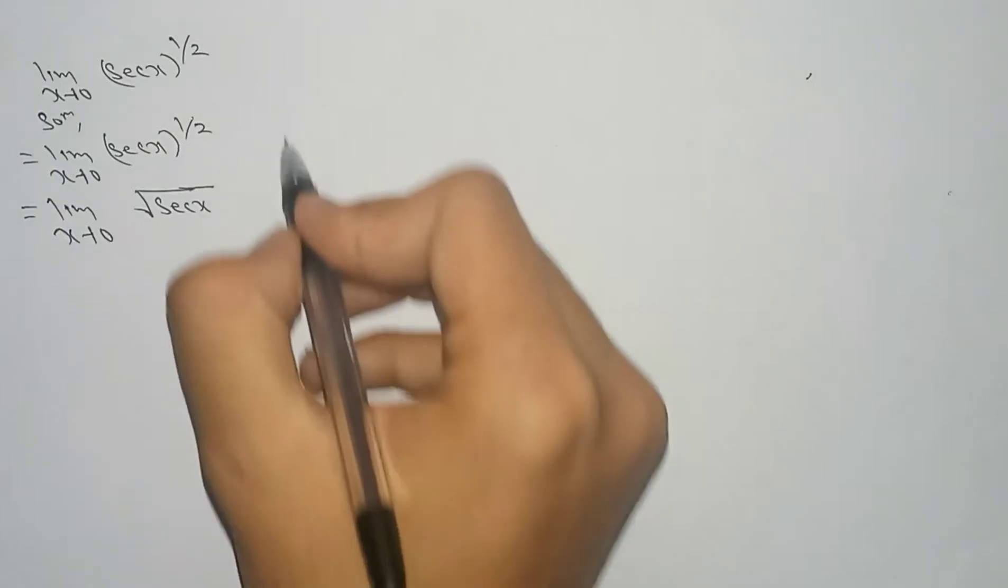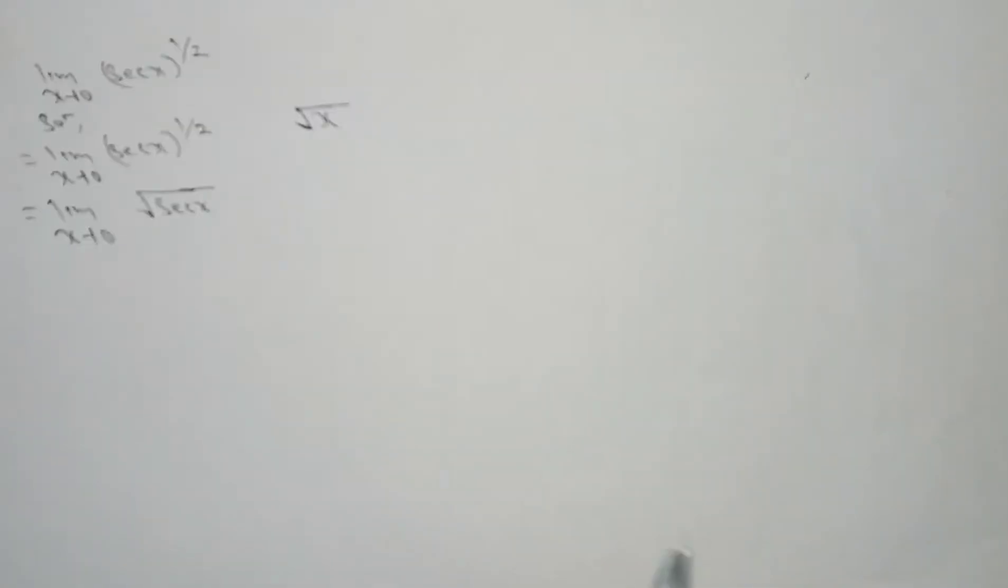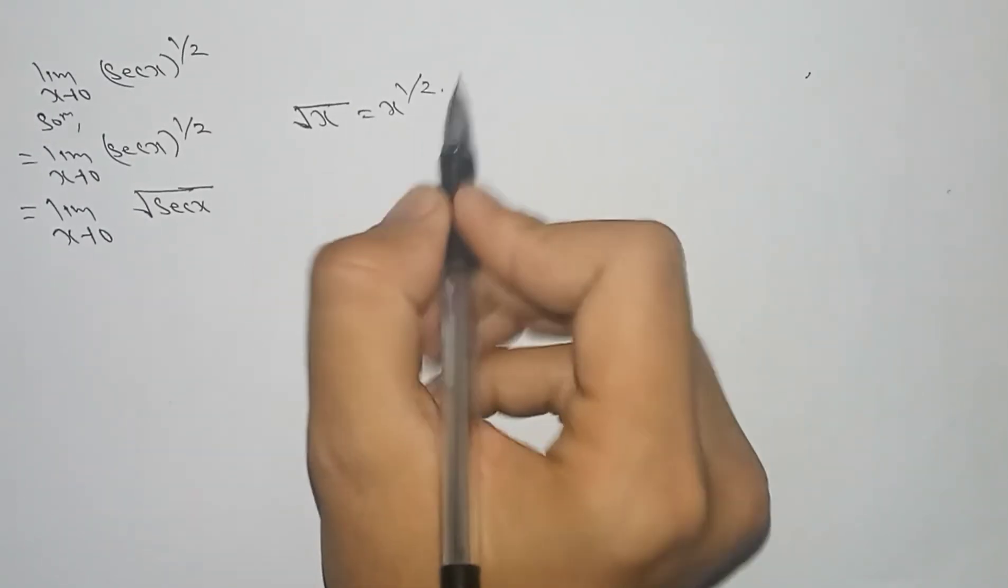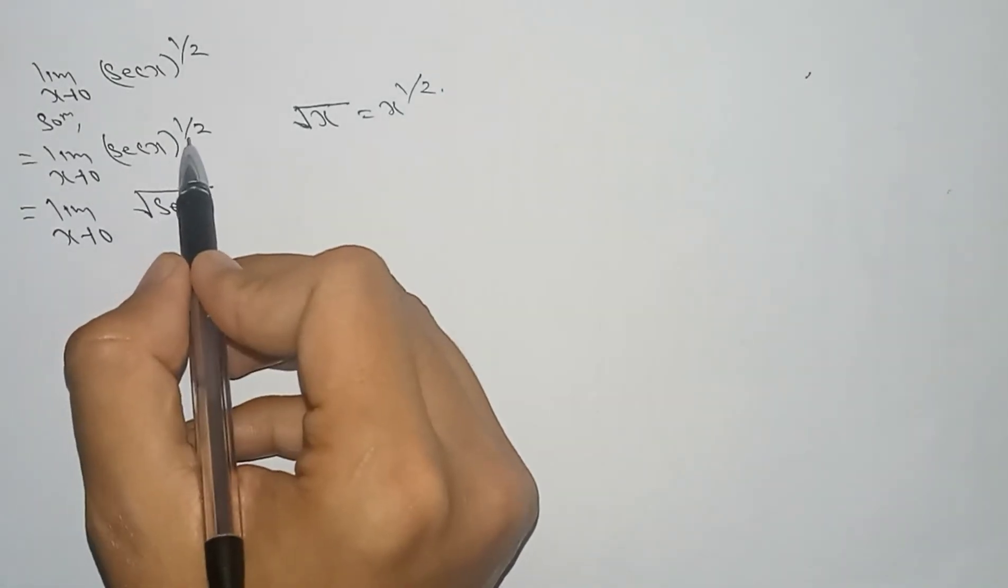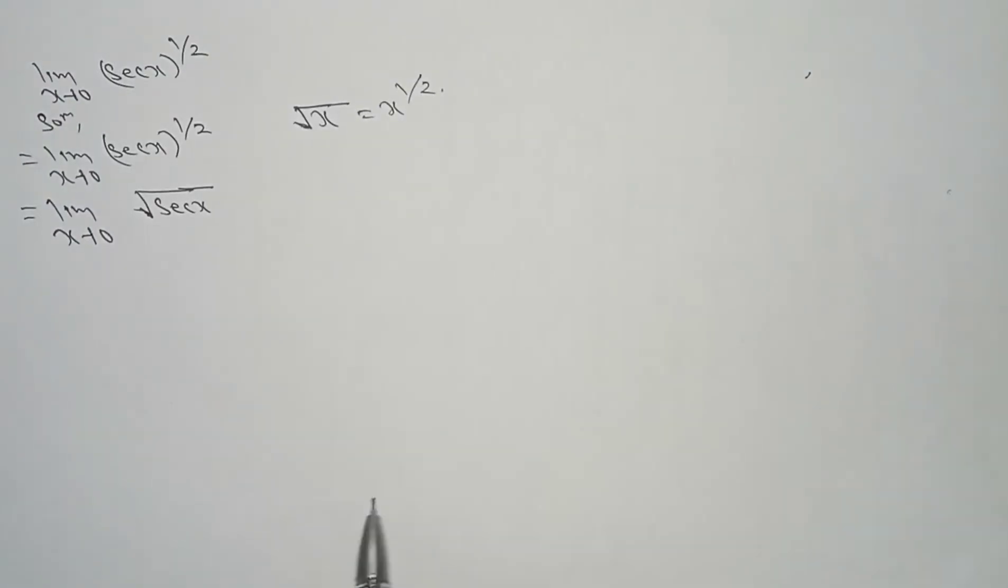As you know, we have an example. Suppose here we have root under x - this can be written as x power up 1 by 2. Like this, here in the outer part we have power up 1 by 2, so we can write this as root under sec x.